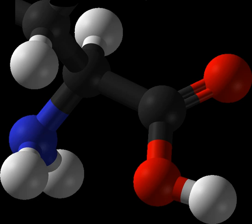Tryptophan is an alpha-amino acid that is used in the biosynthesis of proteins. Tryptophan contains an alpha-amino group, an alpha-carboxylic acid group, and a side chain indole, making it a nonpolar aromatic amino acid.